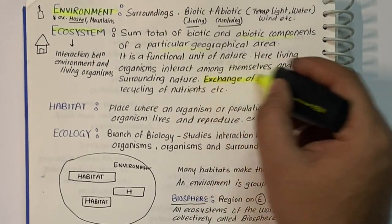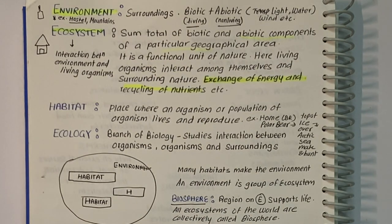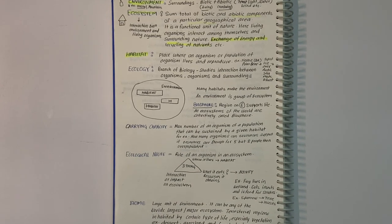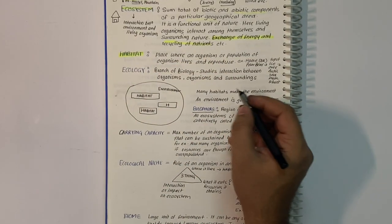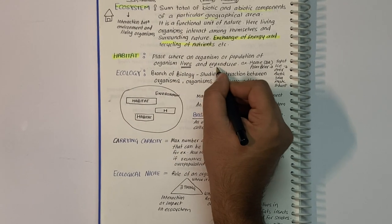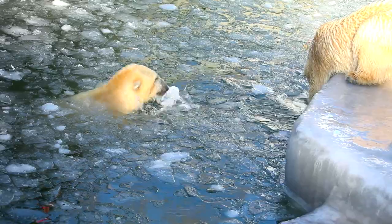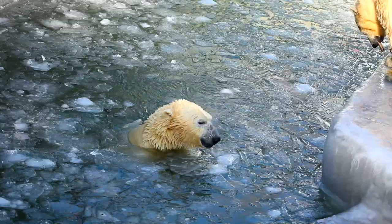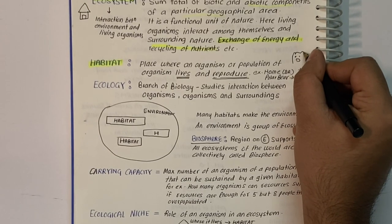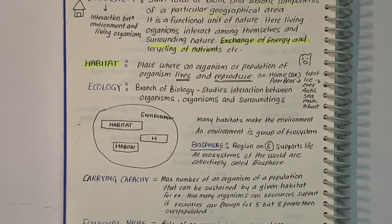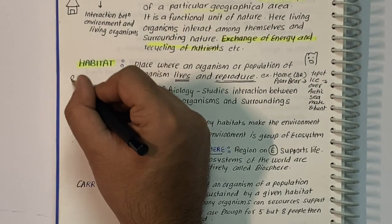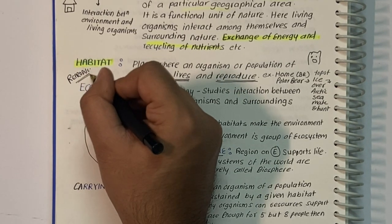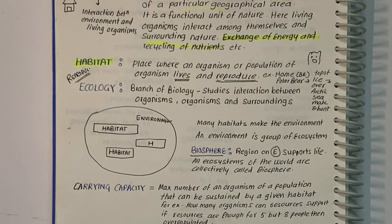Habitat is a place where an organism or population of an organism lives and reproduces. For example, for polar bears, the Arctic sea and surrounding glaciers are their habitat. Many habitats combined together make an environment. Remember that reproduction is equally important to survival — habitat is where you live and reproduce.